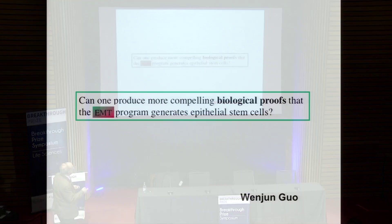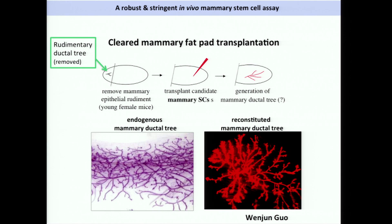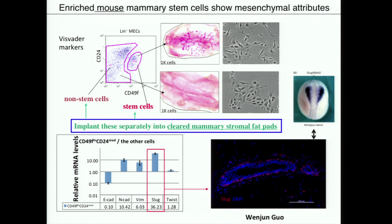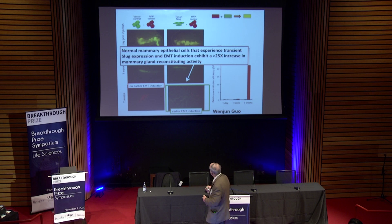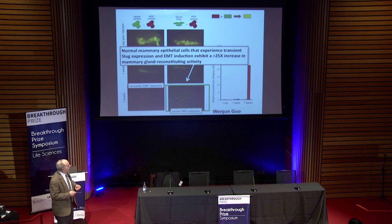Wenjun Guo asked the question: can one produce more compelling experimental proofs that there's a connection between the EMT program and the stem cell program? He took mammary stromal fat pads, removed the rudimentary epithelial cells, implanted mammary epithelial cells, and if they indeed contained mammary epithelial stem cells, they could generate a new and complete mammary ductal tree — a stringent test of stemness. What he found was that if one takes mammary epithelial cells and briefly exposes them to an EMT-inducing signal before implanting them, they form mammary ductal trees at a rate improved by a factor of 25, indicating very strongly the connection between the EMT program and the epithelial stem cell program. He increased stemness by a factor of 100 by exposing cells transiently to EMT-inducing transcription factors.